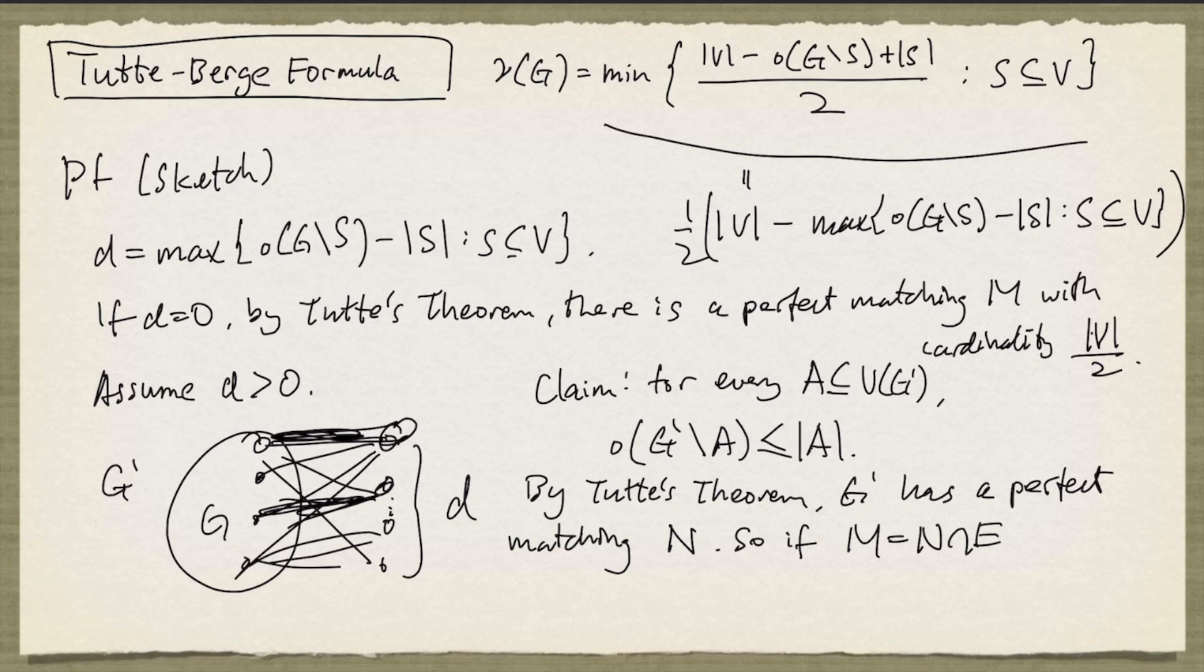Now notice that D edges in N must join one of these new nodes to a node in G. So if we let M denote the set of edges in N that are restricted to edges in G, then M will be a matching in G and there will be exactly D M exposed nodes.